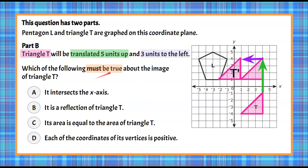Let's go check our answer choices to determine which must be true. Choice A: it intersects the x-axis. Well, the x-axis is here and the image does not intersect that — it intersects the y-axis but not the x-axis. So this is not a true statement. Choice B: it is a reflection of triangle T. It is not. It has not been flipped over a line of reflection; it has been translated — slid up and left. So it's not B.